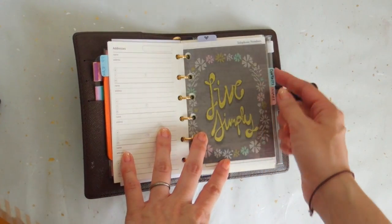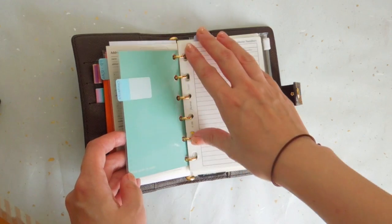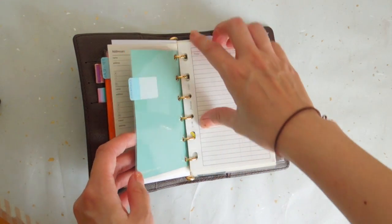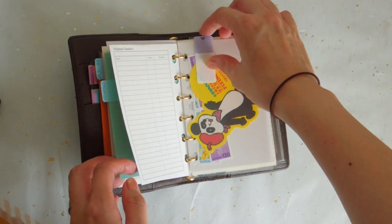My next section is contacts, and it's blank now, but I will most likely put some emergency contact information in here. And this is the main tab I go to often.